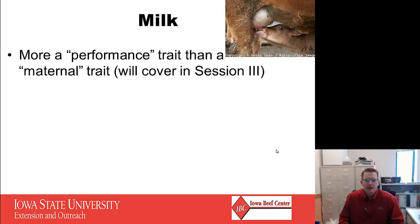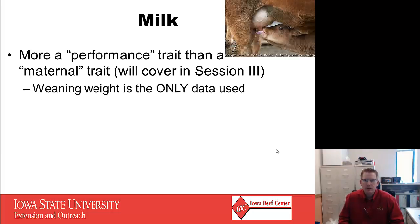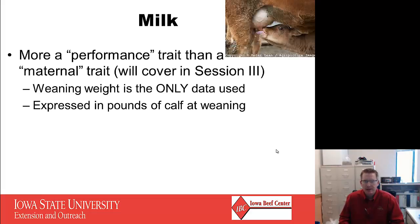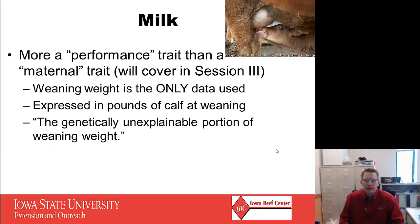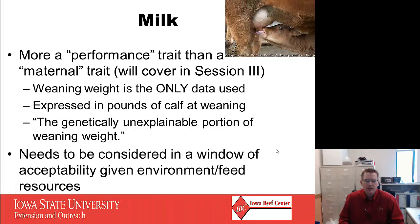Milk might surprise some as a growth trait, but it is more of a performance trait than a maternal trait — we'll cover it again in session three. Weaning weight is the only data used to determine milk; it is expressed in pounds of calf at weaning, not pounds of milk. It is essentially the genetically unexplainable portion of weaning weight — what's left after the cow's own growth performance is attributed to her is considered milk, representing her ability to make that calf outgrow expectations. It should be managed within a window of acceptability given your environment and feed resources, not necessarily maximized.